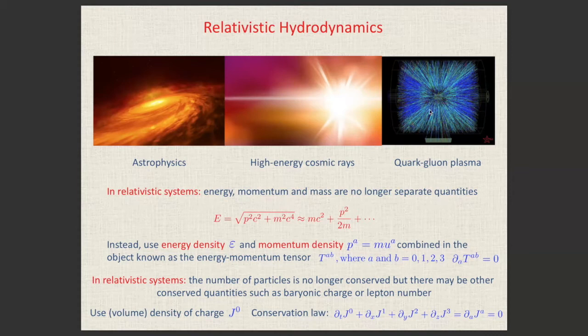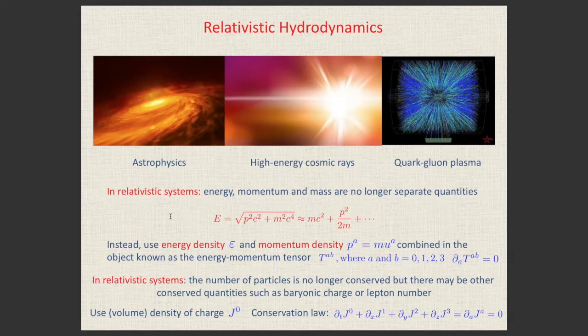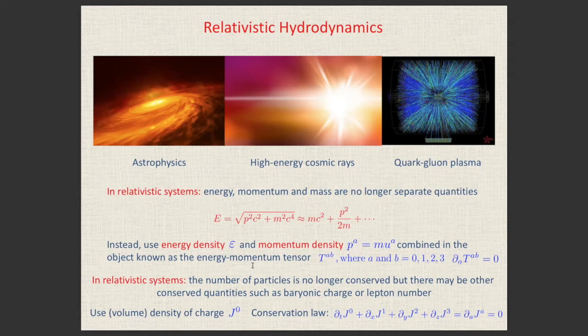In the relativistic domain, energy, momentum, and mass are tied together — E equals MC squared is the simple limit. We must use energy density and momentum density as basic variables. These are packaged into the energy-momentum tensor T^{ab}, with indices a and b running from zero to three in the Minkowski spacetime language of special relativity.